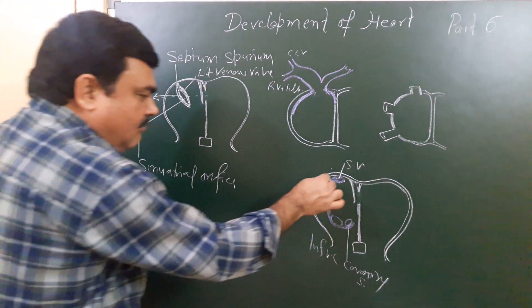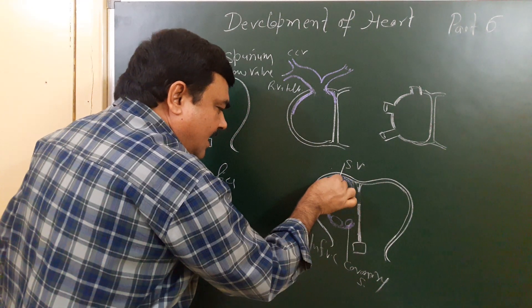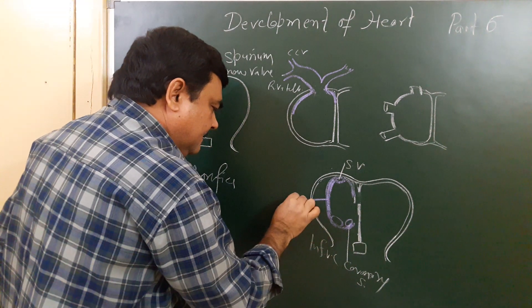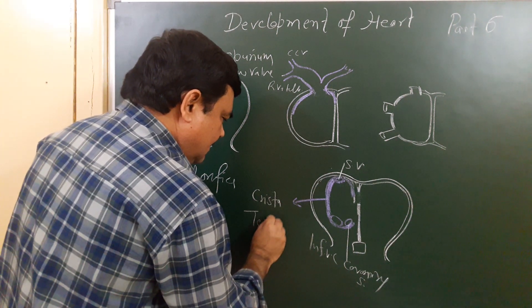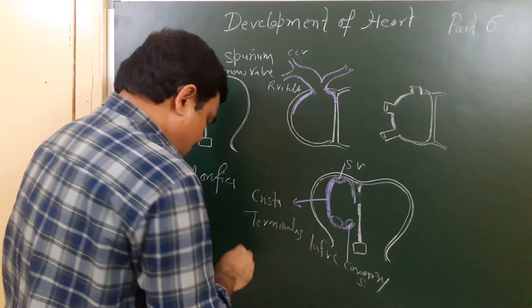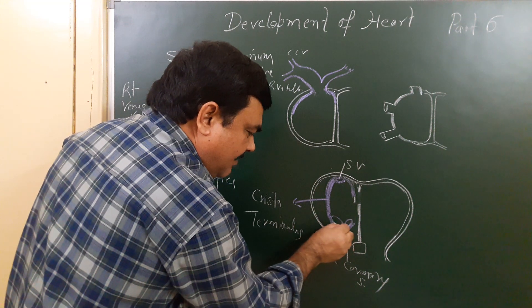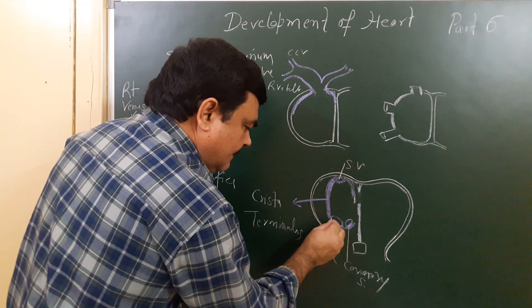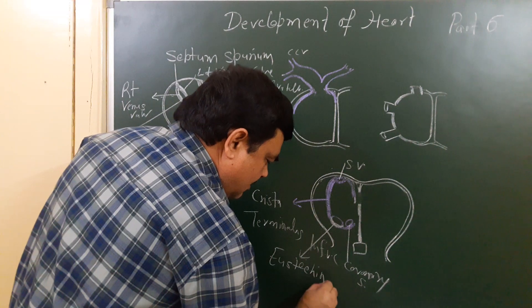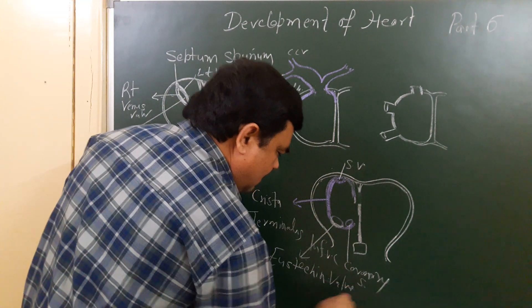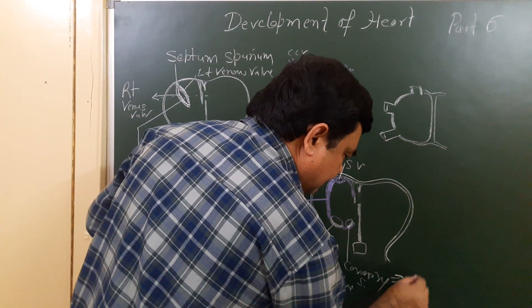At the sino-atrial orifice, the right venous valve is present. The left valve merges with the inter-atrial septum, and the right valve forms the crista terminalis. This is the valve of the inferior vena cava, known as the Eustachian valve. The valve of the coronary sinus is known as the Thebesian valve.